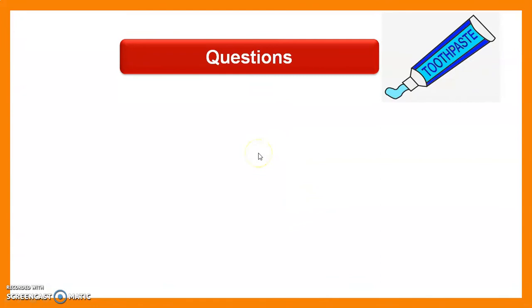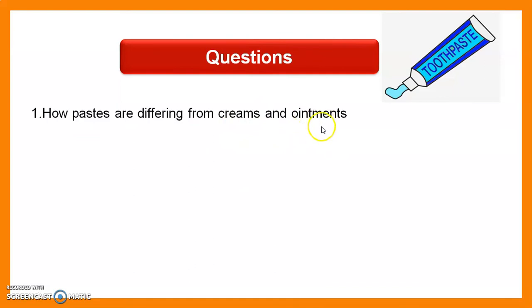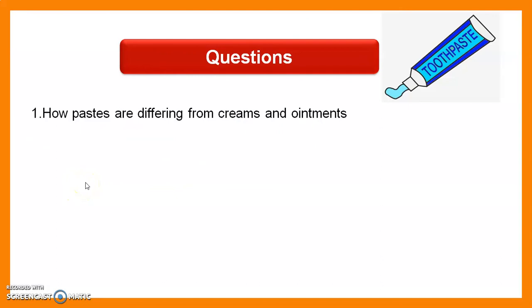Question 1: How do pastes differ from creams and ointments? In pastes there is a large concentration of solid content. Pastes are not sticky, whereas creams and ointments are sticky and greasy because they contain oil. Creams and ointments form a specific kind of emulsion, while pastes simply incorporate fillers or solid content. Pastes are stiff, whereas creams and ointments are not.